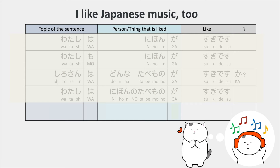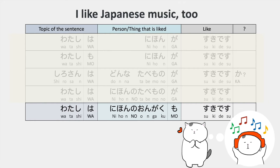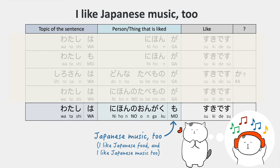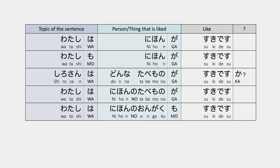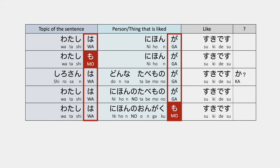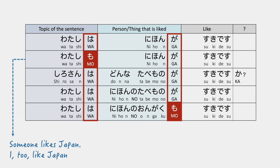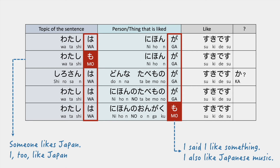I like Japanese music too. Watashi wa Nihon no ongaku mo suki desu. Shiro just mentioned that she likes Japanese food, and she wanted to say she likes Japanese music too, so we use the mo particle. Notice that mo can replace both the wa particle and the ga particle. Watashi mo Nihon ga suki desu indicates that someone likes Japan and I too like Japan. Watashi wa Nihon no ongaku mo suki desu indicates that I said I like something, and I also like Japanese music.